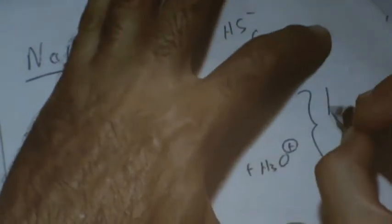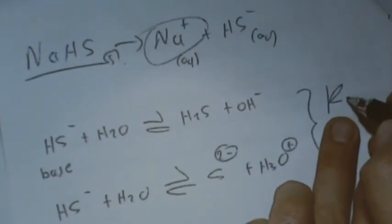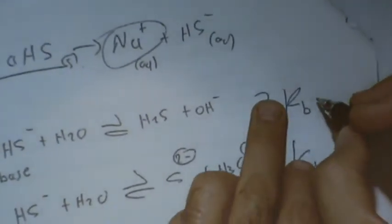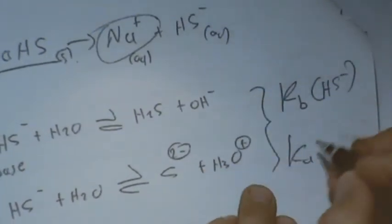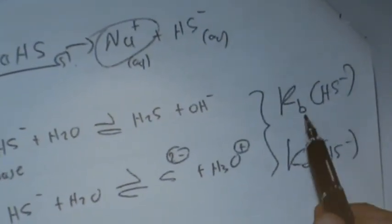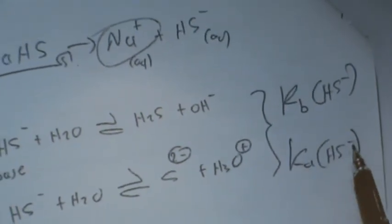I'm letting you know KB and KA. KB of HS minus. KA of HS minus. Equilibrium constant of HS minus - that means the base - and equilibrium constant of HS minus, the same component, that means an acid.